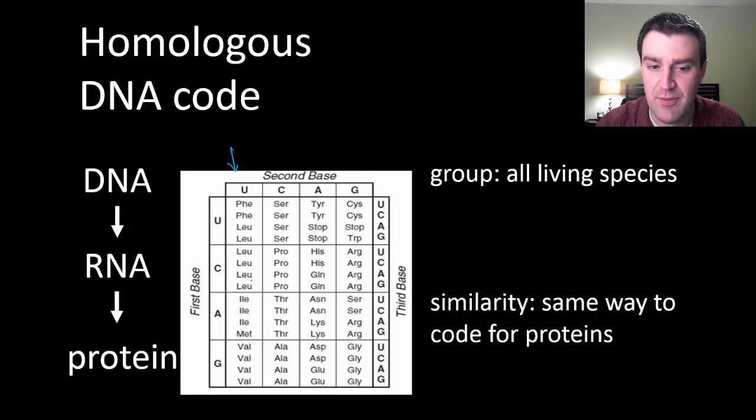We've used a translation table like this, which tells us how groups of three RNA letters code for particular amino acids. But as it turns out, that same translation table works in all living organisms. That's why I can take DNA code out of a human cell and put it into a bacterium, like maybe the gene for insulin for example, and I can still have that bacterium make insulin protein for me. So a shocking amount of similarity that's shared across all species.